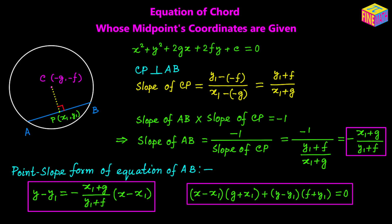That is another form of the equation of chord AB. Both forms are exactly the same equation — just written slightly differently. So our derivation is complete. Next, we are going to take an example.